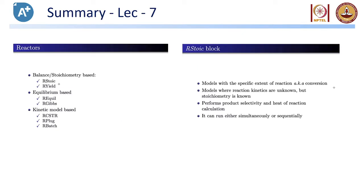Going back to the summary of the lecture: the professor classified reactors into three categories - one based on stoichiometry, one based on equilibrium, and the third based on a kinetic model. For stoichiometric-based, there are two reactors in Aspen: stoichiometry and yield-based. For equilibrium-based, there are two reactors: R-Equilibrium and R-Gibbs free energy based reactor. For the kinetic model, he discusses three reactors: CSTR, plug flow, and batch reactor. Can anyone point out the difference between R-Equilibrium and R-Gibbs?